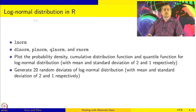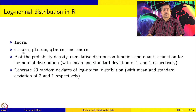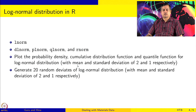For log normal distribution in R, the command prefix is lnorm. So dlnorm, plnorm, qlnorm, and rlnorm are the function calls. You can get the probability density, cumulative distribution function, and quantile function using the first three, and random deviates are generated using rlnorm. We are going to use a mean log of 2 and standard deviation log of 1 to generate these quantities just to check.